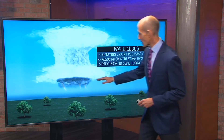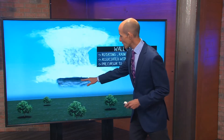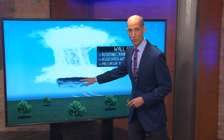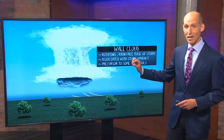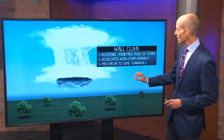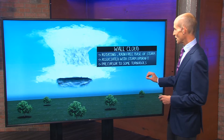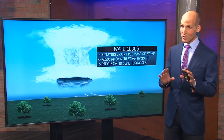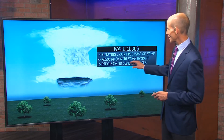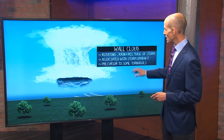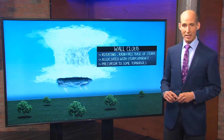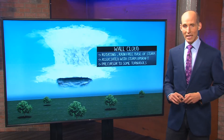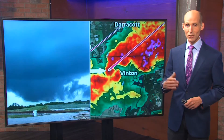Now, a wall cloud is actually the rotating part of the thunderstorm at the base of the updraft. So this is the updraft cloud associated with thunderstorms sometimes — not all the time, but sometimes. And this sometimes will lead to tornadic development if all the conditions are met.